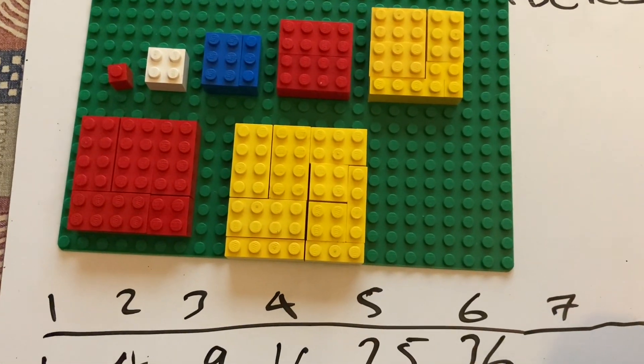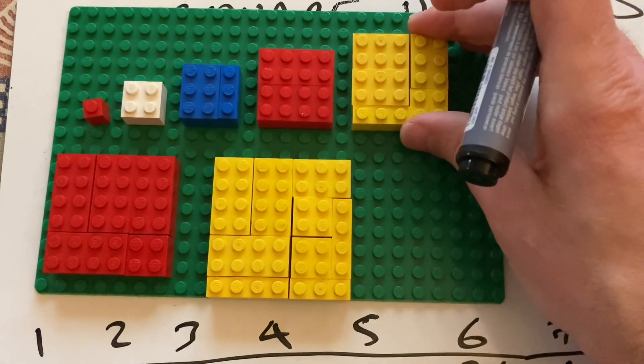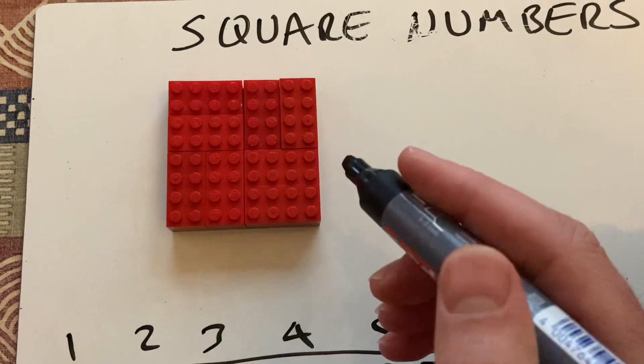That's seven by seven. What's seven times seven? Forty-nine. Forty-nine. And to save time, we've built the next three. Which are 81, nine times nine.